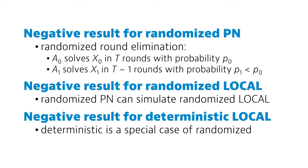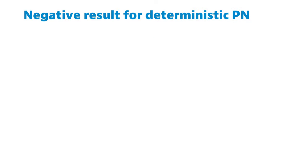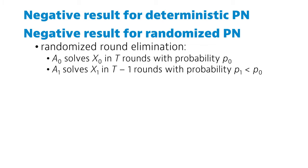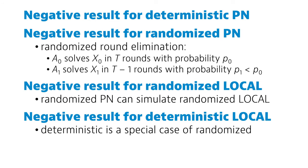So this is the high-level plan that we are following this week. There are fairly many technicalities we need to worry about, but the good news is that once you learn to use these tools, you can apply the same ideas in the study of many other problems. First, use round elimination to prove a negative result in the deterministic PN model. Then take into account probabilities to prove the same result for randomized PN algorithms. And then you can easily conclude that the same result also holds for the local model, both for randomized and deterministic algorithms.